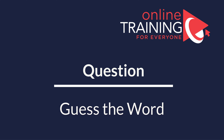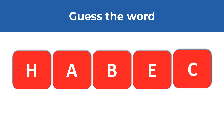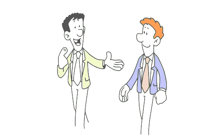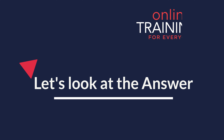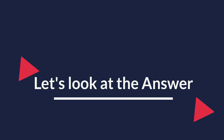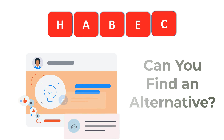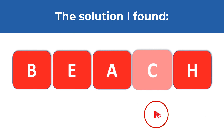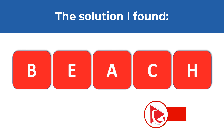Here's an interesting question from a recent test. You need to figure out a word from five letters: H, A, B, E, and C. Make sure to use all the letters only once. Give yourself 10 to 20 seconds — you can pause the video. The solution I found is the word 'beach' — spelled B, E, A, C, H. Keep in mind that multiple words can sometimes be formed, so if you see another word, please share it in comments.